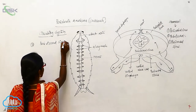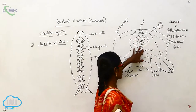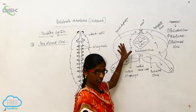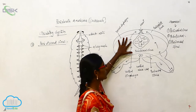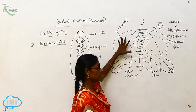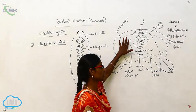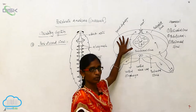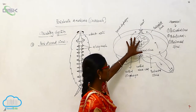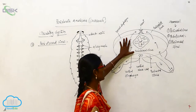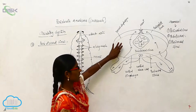The perivisceral sinus consists of all the visceral organs, that is the crop, gizzard and hepatic caecae, mesenteron and Malpighian tubules, colon, ileum and rectum. So these organs are present at the perivisceral sinus, that's why it is called perivisceral sinus.